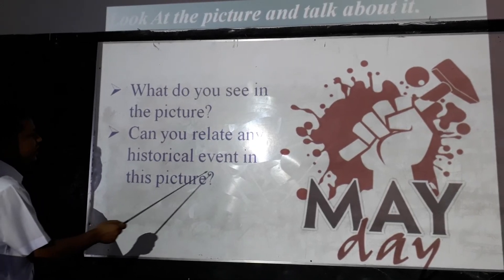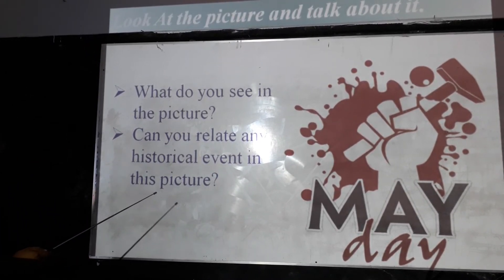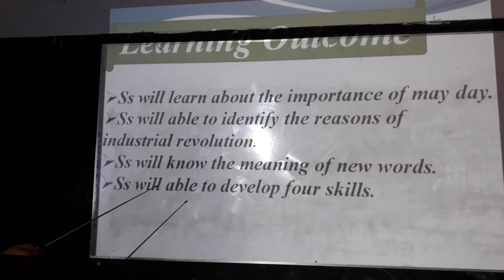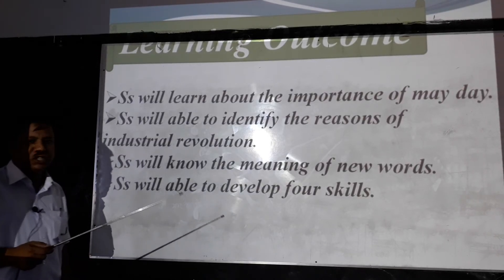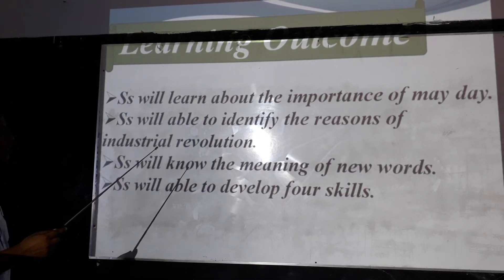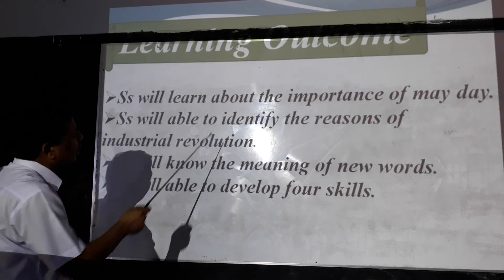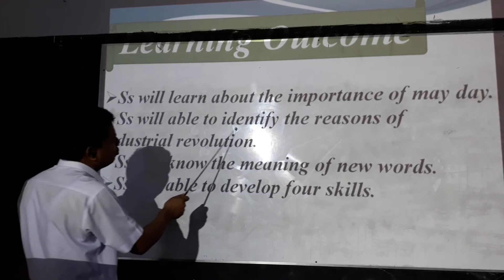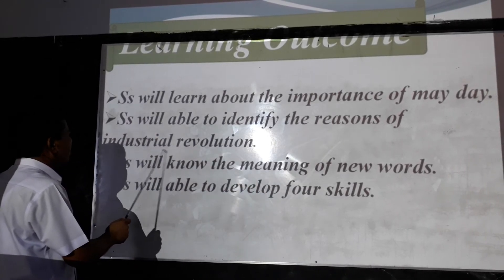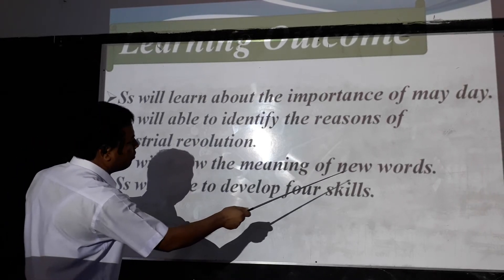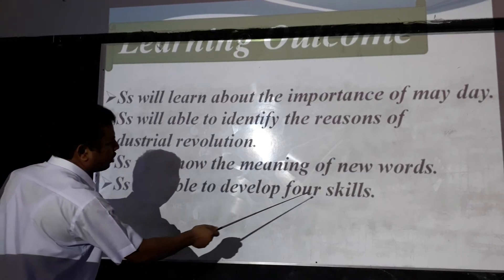Can you relate any historical event in this picture? What happened on this day? Learning outcomes — dear students, when all of you read this text, you will learn about the importance of the topic. You will be able to identify the reasons for the industrial revolution, know the meaning of new words, and be able to develop four skills.